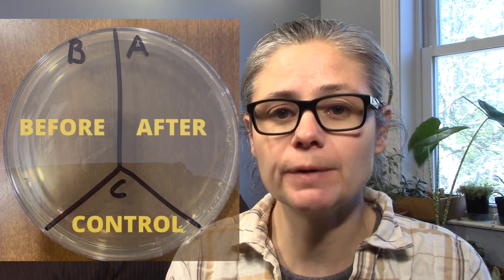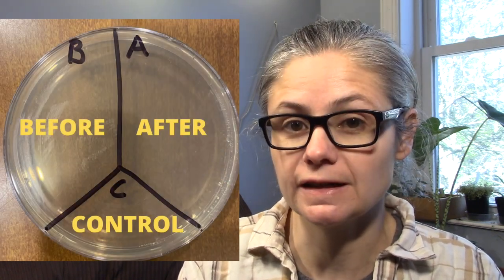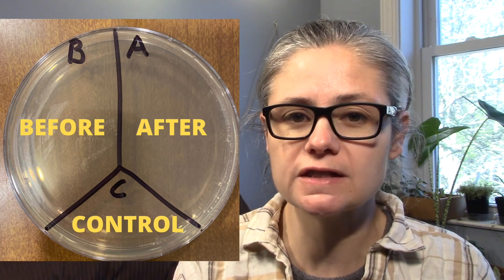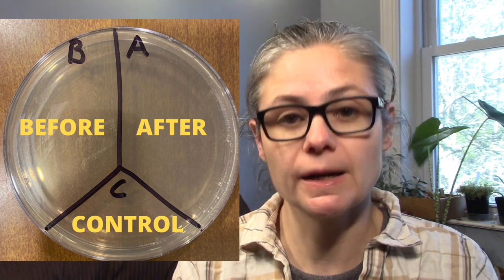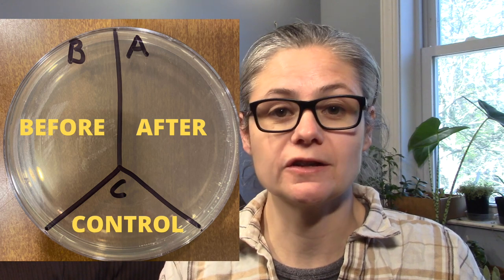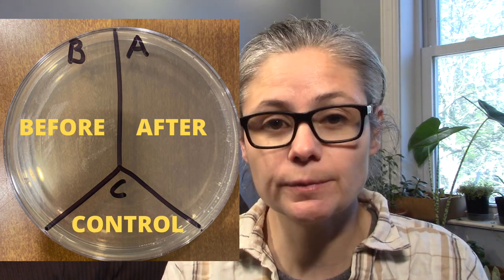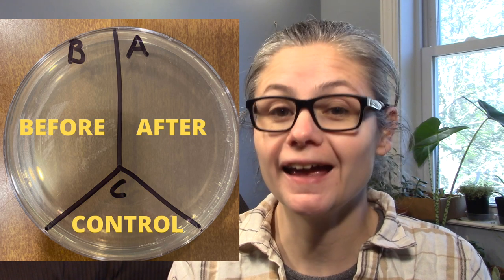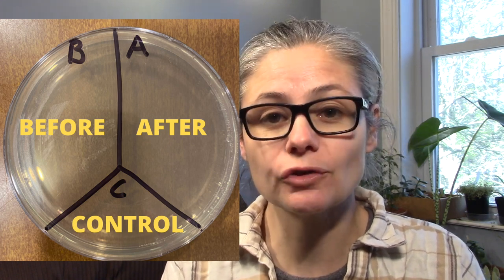If you haven't seen any of my product test videos, what I do when testing a product's efficacy for removing bacteria is I take a Petri dish like this one and label it A, B, and C. Then I take some sterile swabs and swab various areas around my home — usually the kitchen counter, kitchen sink, bathroom sink, and the toilet area. I place those samples on separate Petri dishes in section B for 'before.' Then I use whatever product I'm testing, whether it be a cleaner, disinfectant, or sanitizer, and follow the label directions. Then I take another sterile swab, swab the area again, and place that in section A for 'after.' C is my control — I don't put anything there.